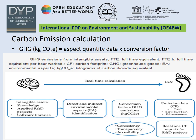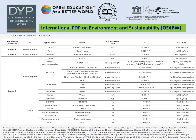Carbon emission can be calculated using the formula: Carbon Emission = Aspect Quantity Data × Conversion Factor. Aspect quantity data refers to how much fuel or which instrument is being used. The conversion factor will be discussed in the next table. We can find real-time calculations using direct and indirect environmental aspects, conversion factors, greenhouse gas emissions in kg, and emission data in terms of carbon factor. The table allows people to select the appropriate aspect data unit and carbon factor.